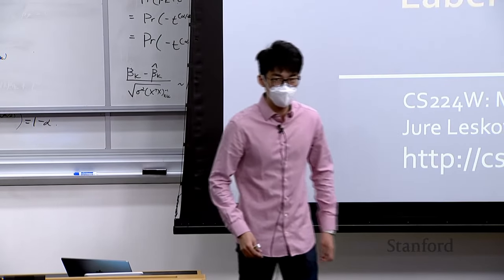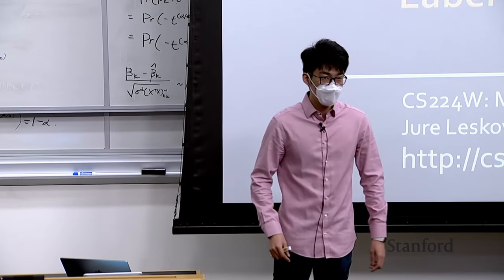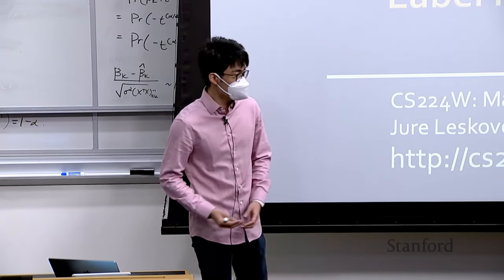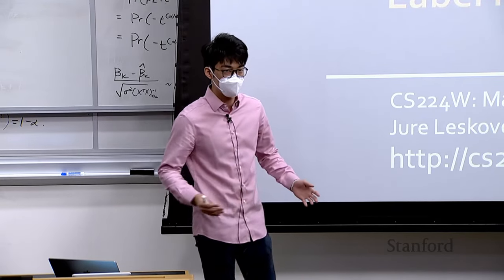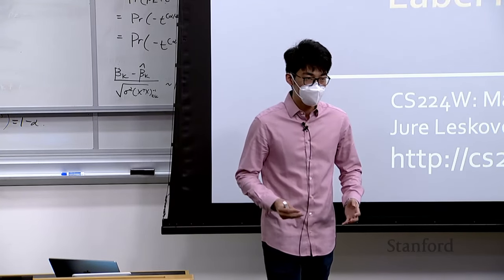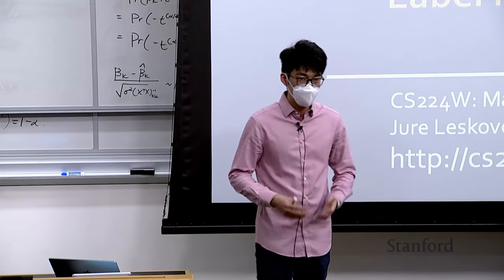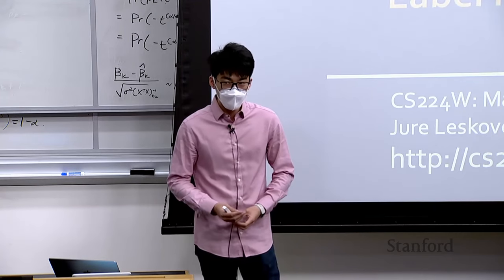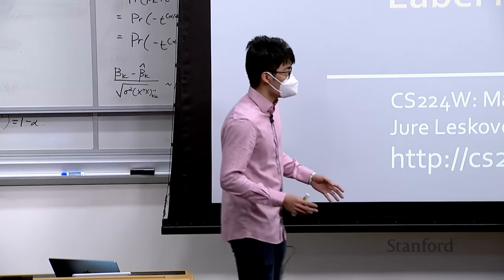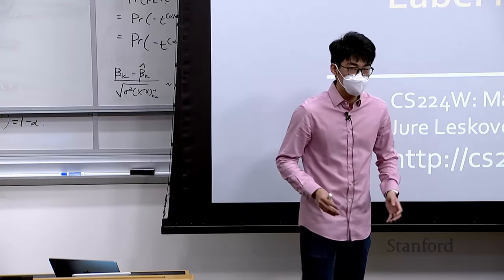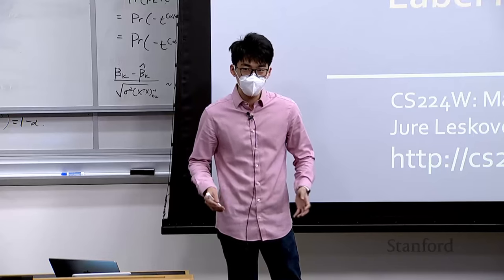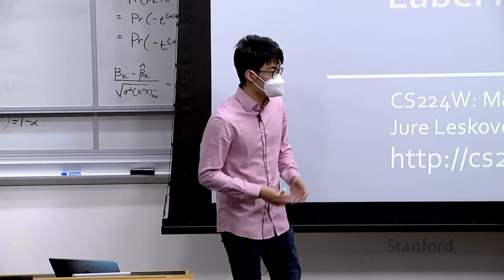Welcome back to Stanford's CS224W. Today we're going to continue our discussion on machine learning with graphs, and in particular we'll be visiting a new family of solutions that can do classifications on graphs. Earlier we focused on graph neural networks, and today we'll explore another idea that shares similar intuitions, called label propagation.